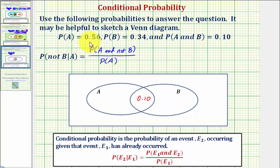Next, because the probability of A equals 0.56, it does include this probability, because notice how this region is in A. So the probability of being in this region, which is only A, would be 0.56 minus 0.1, which is 0.46.